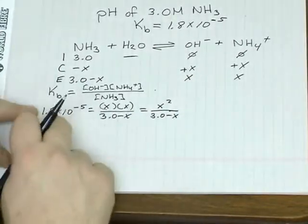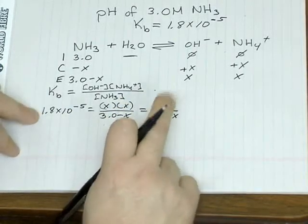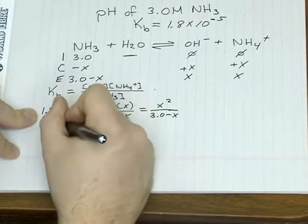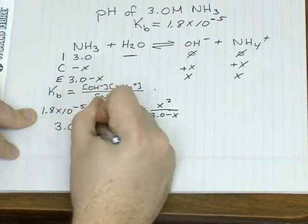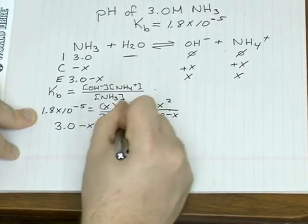So once again, we compare our value of K to the thing we're subtracting x from. They should be significantly different enough where, again, we can make the approximation that 3 minus x is going to be approximately 3.